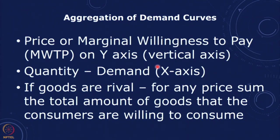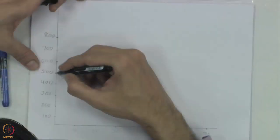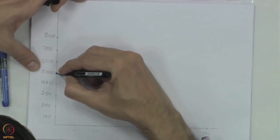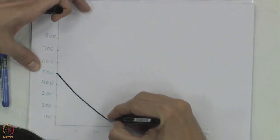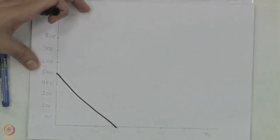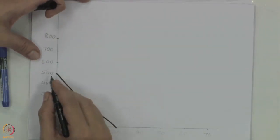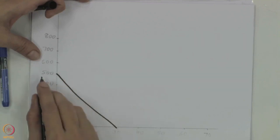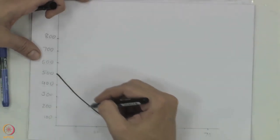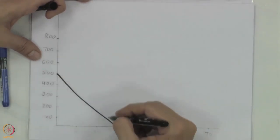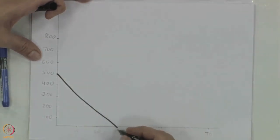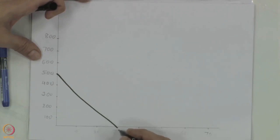Let us consider a person who has a demand curve for a particular commodity where, if the price goes beyond 500, we do not want to buy any of it, and if the price reduces, the demand would increase. The maximum that this customer requires is 30 units, and even if the price is 0, they are not going to consume more than that.